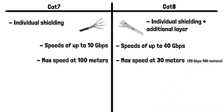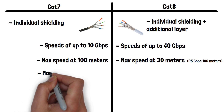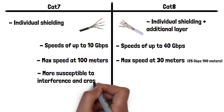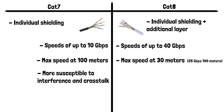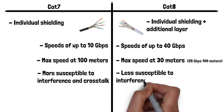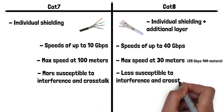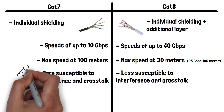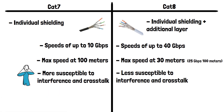Now let's look at interference, also known as crosstalk. CAT7 cables are more susceptible to interference and crosstalk compared to CAT8 cables. This means that in high traffic or noisy environments, CAT7 may experience more signal degradation, potentially leading to a complete loss of signal.